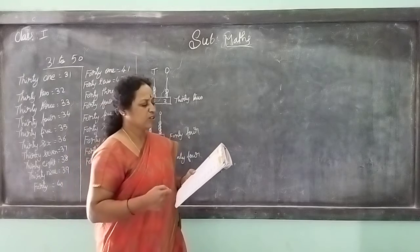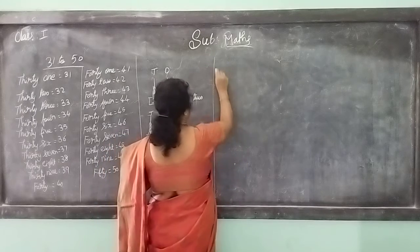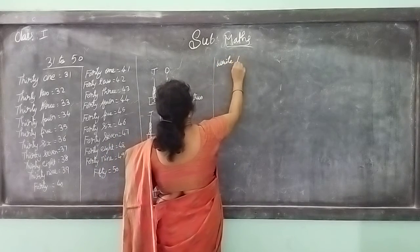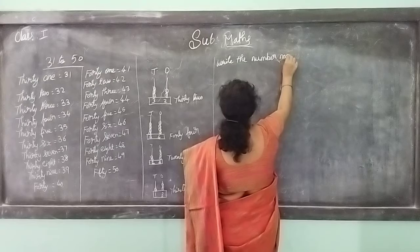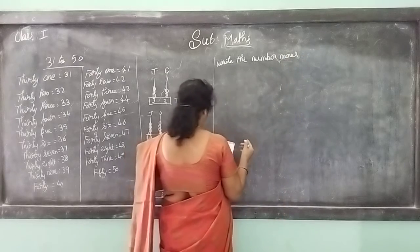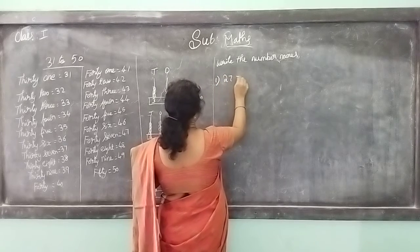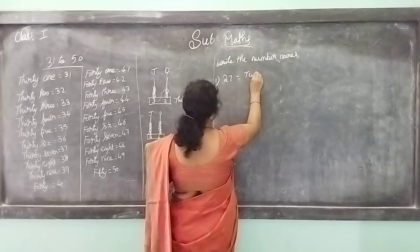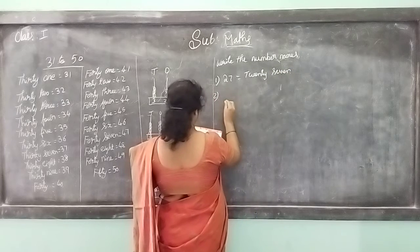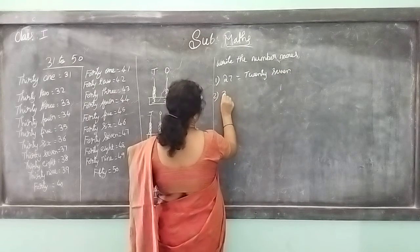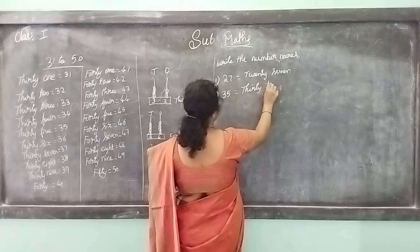Now write the number names for the following. We are given some numbers and we have to write them in words. This one is 27 - T-W-E-N-T-Y S-E-V-E-N, 27. This one is 35 - T-H-I-R-T-Y F-I-V-E, 35.